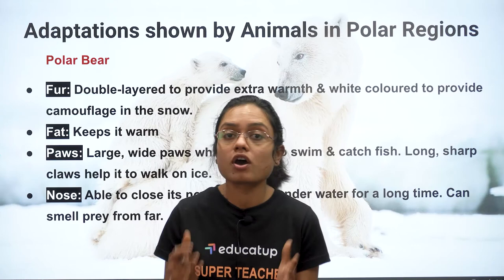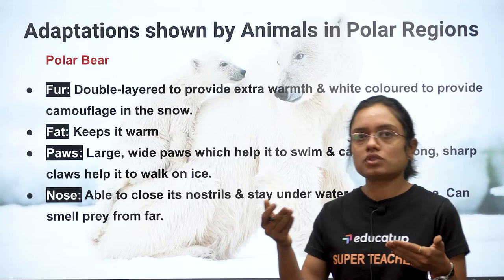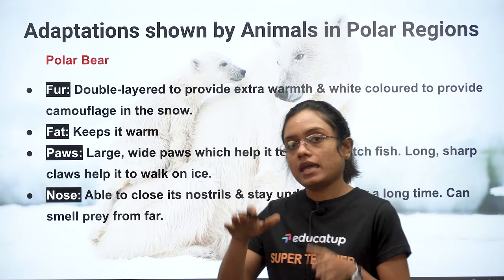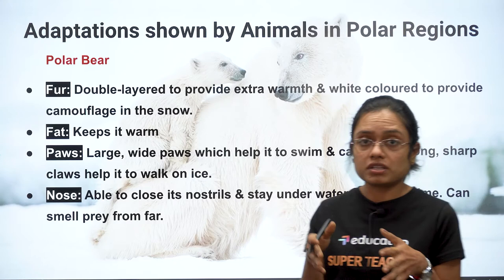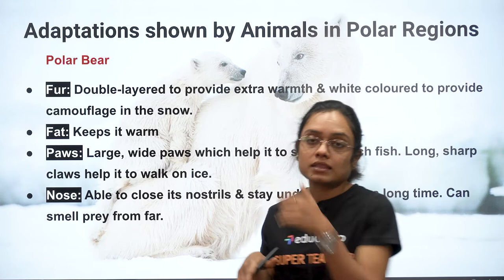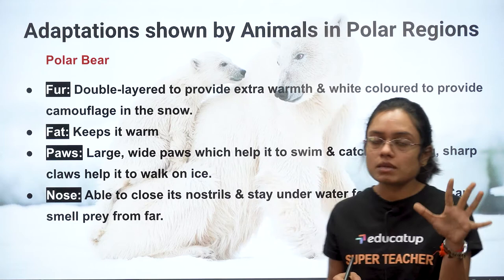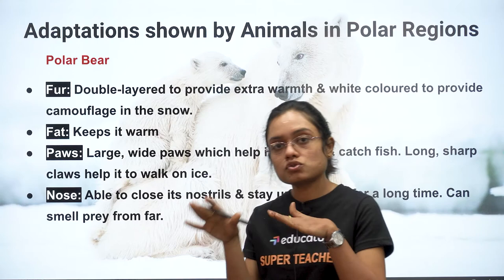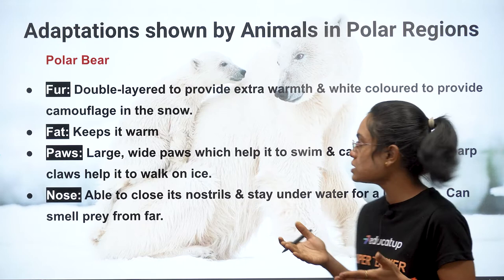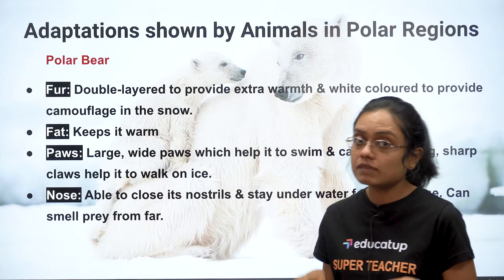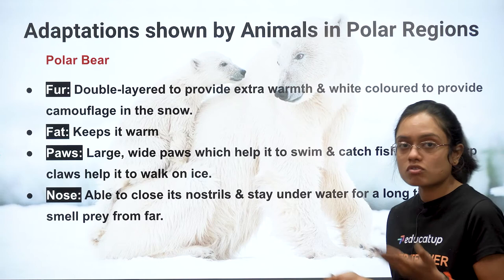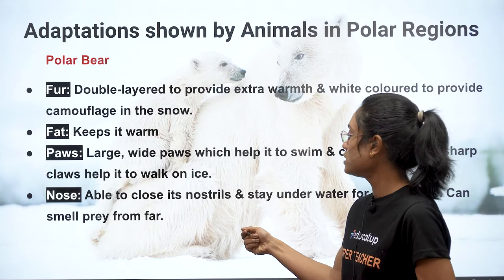Adaptations of the polar bear: its body is completely covered with thick double-layered fur, providing extra warmth. The white color helps it camouflage in the snow, protecting it from hunters. Fat stored in the body keeps it warm. Its large, widespread paws help it swim and move on snow. It can also close its nostrils and stay underwater for a very long time.